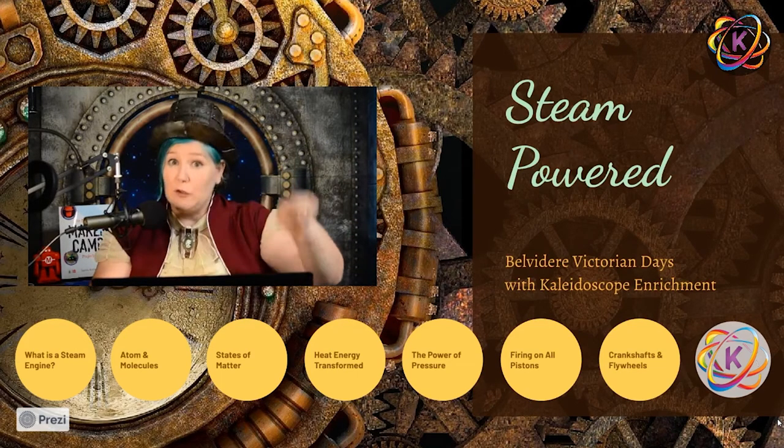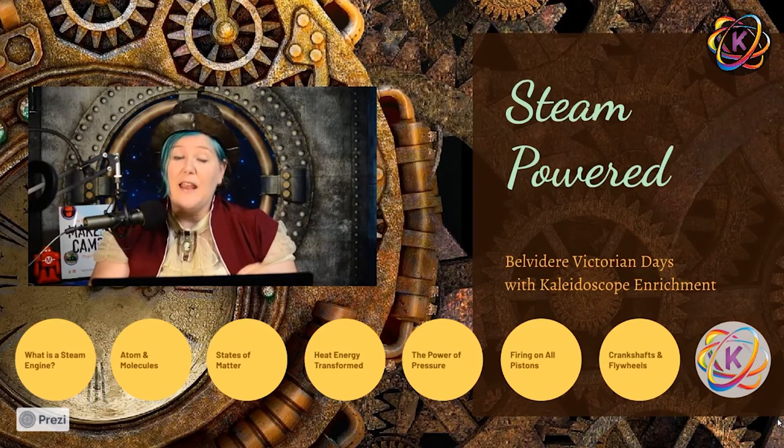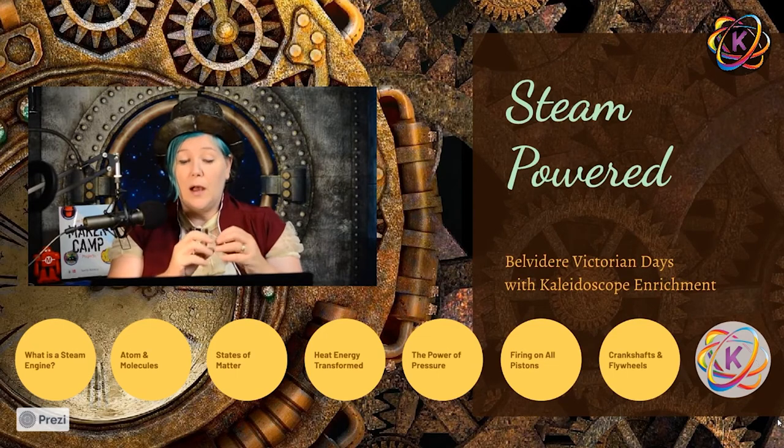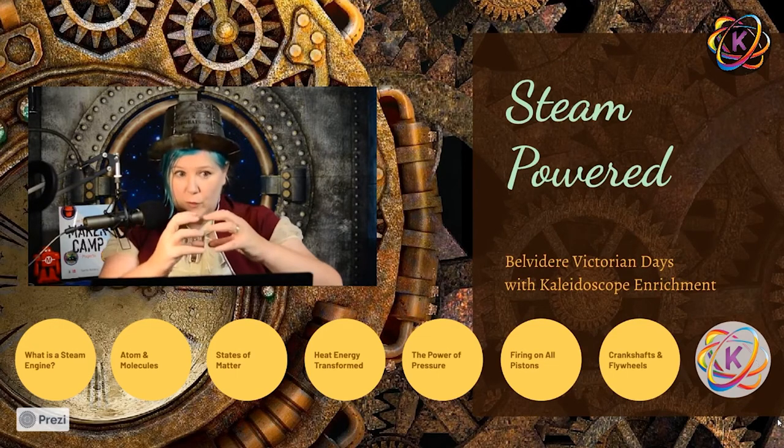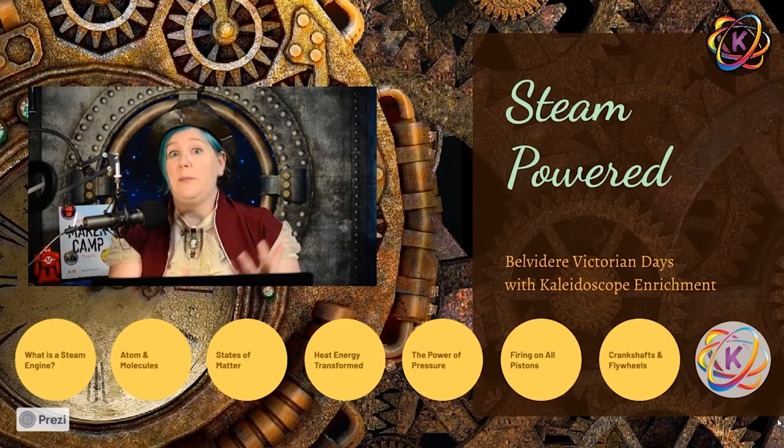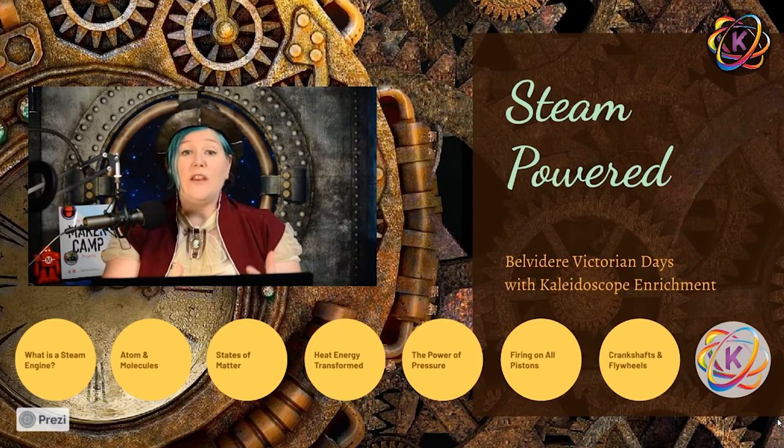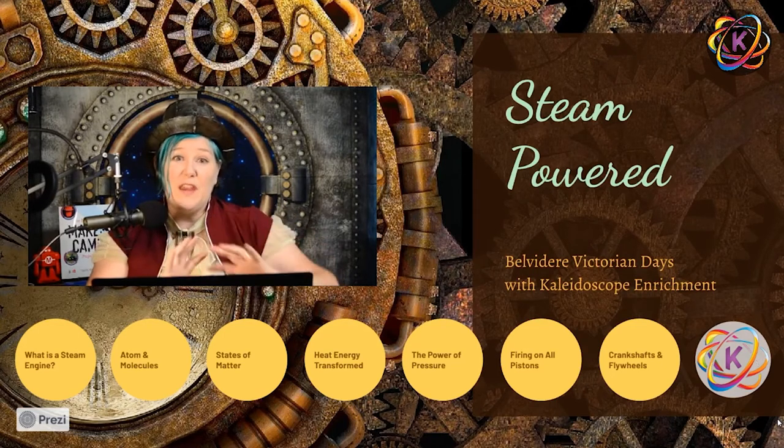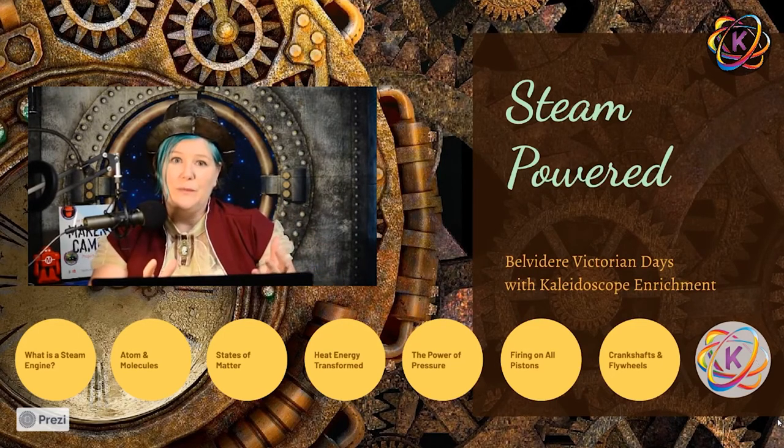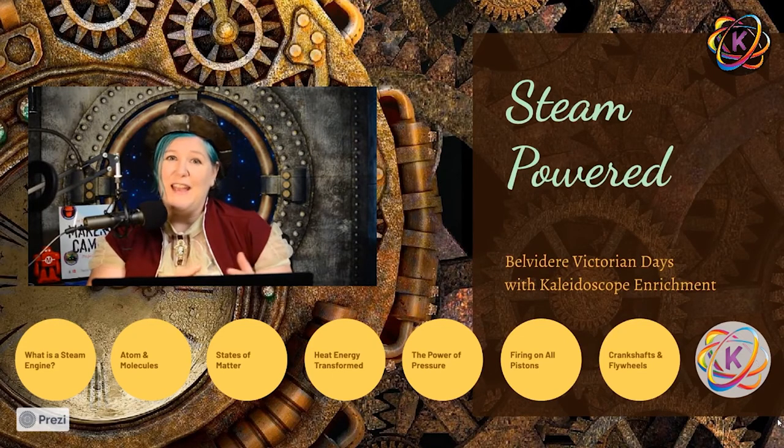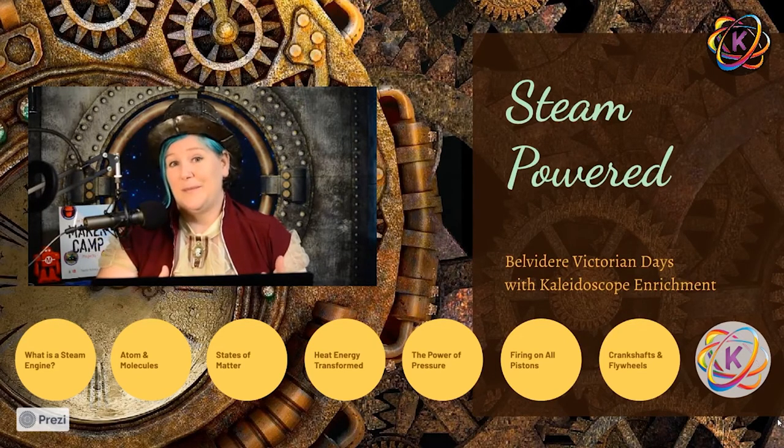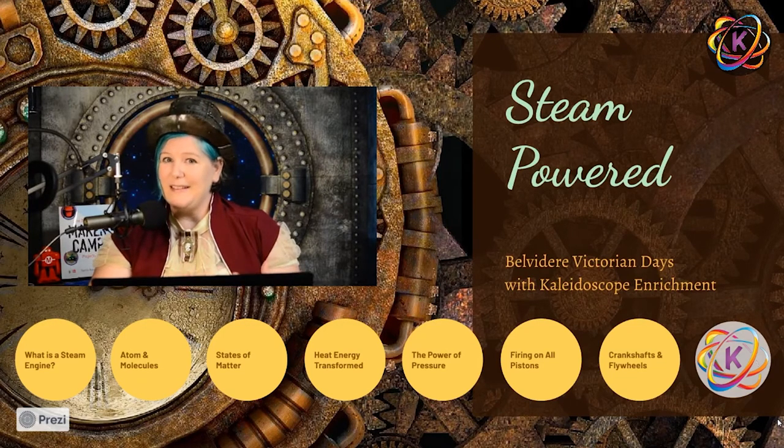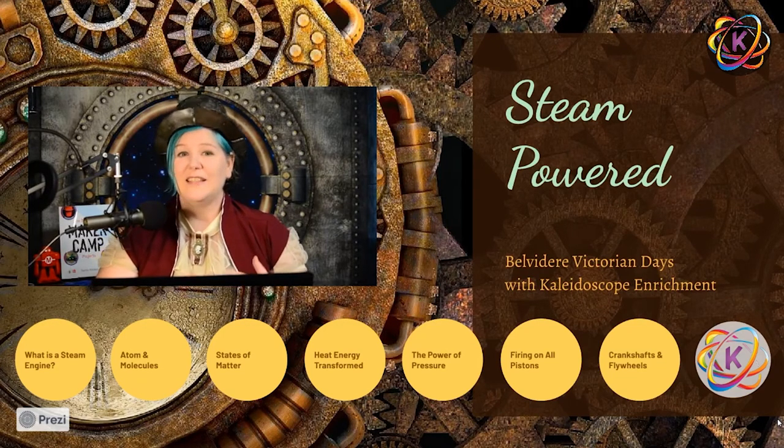The steam turns a steam turbine and that actually moves a coil of wire, a very densely coiled piece of coil of wire, and it moves it within a whole bunch of really big magnets. And when you move wire in a rotation within a magnetic field, that moves electrons and creates electricity. Also something that we discovered during the Victorian era. So steam technology is still being used today to generate electricity.